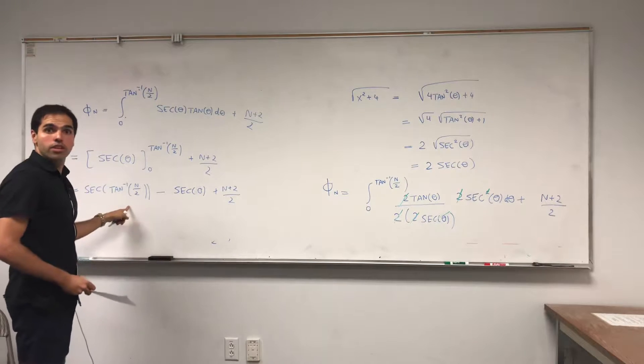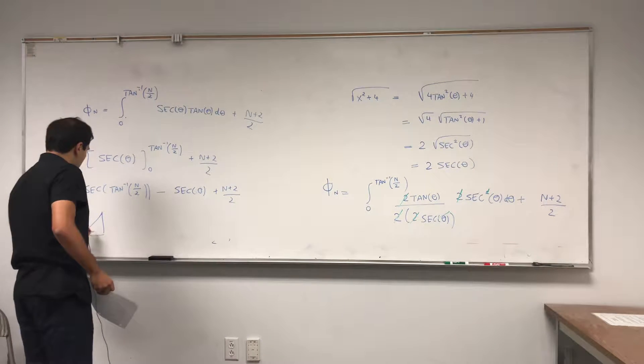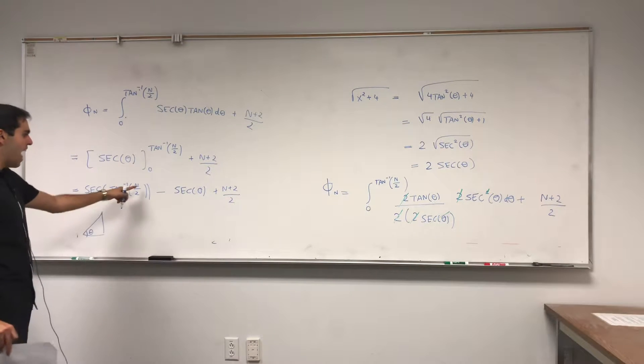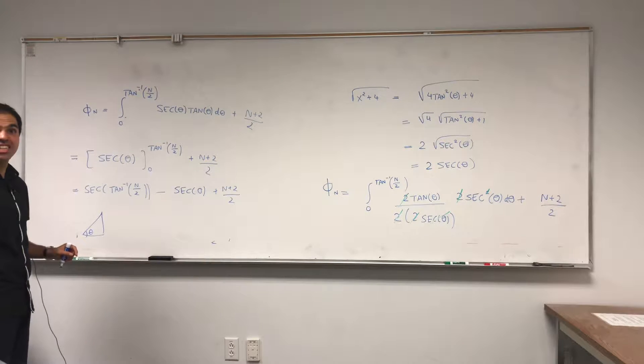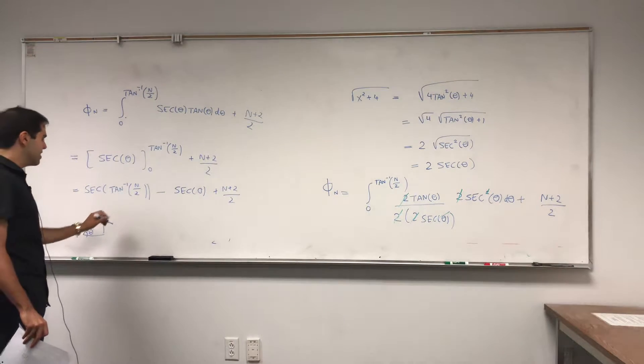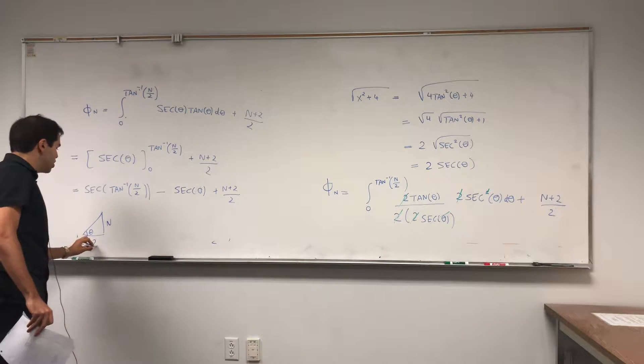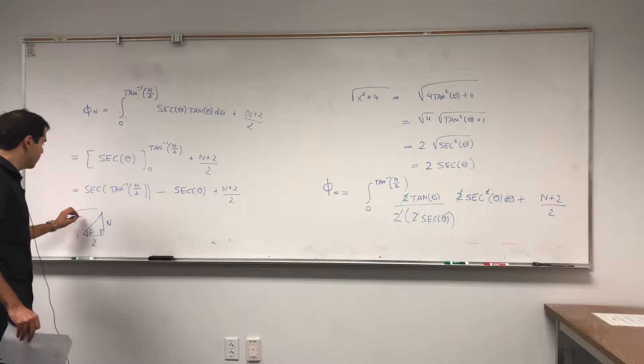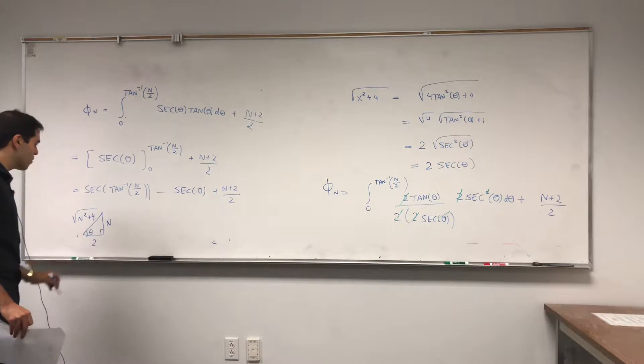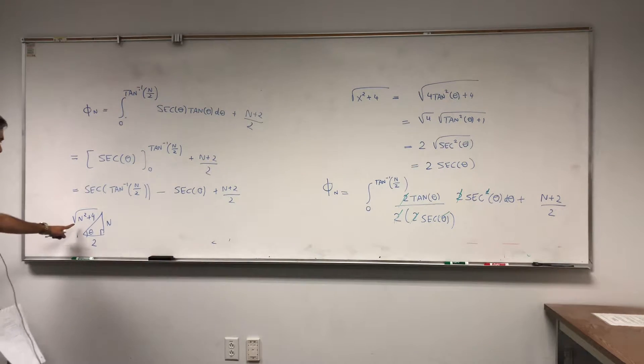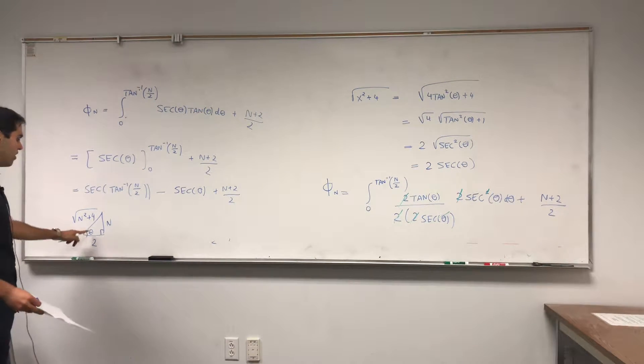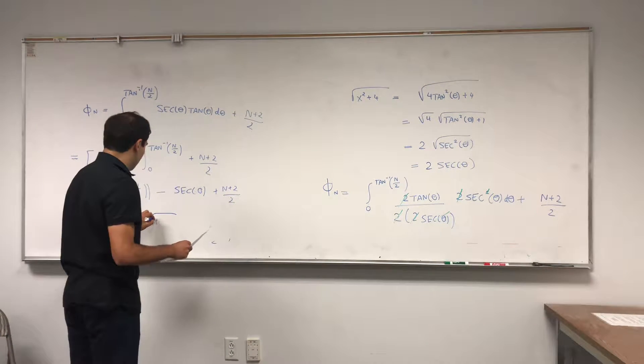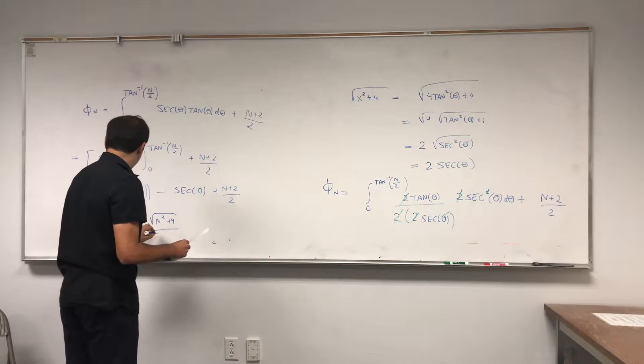Now this thing you can just simplify. So what is arc tangent of n over 2? It's the angle that makes tangent to be n over 2. So basically you want opposite to be n, adjacent to be 2. Then by the Pythagorean theorem this becomes square root of n squared plus 4. And secant just becomes hypotenuse over adjacent, so in the end we get square root of n squared plus 4 over 2.